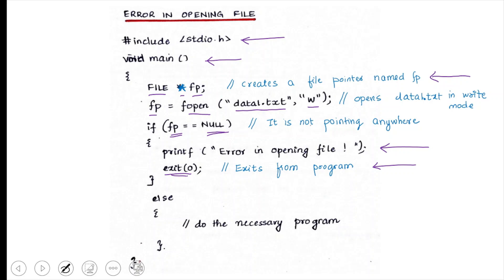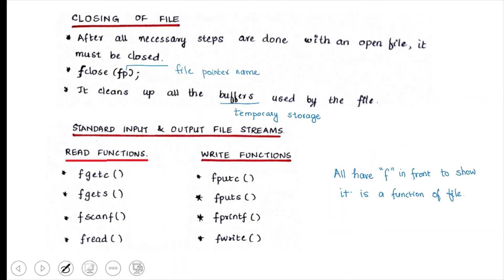If the file pointer is not NULL, it points to a valid memory location and you can perform necessary operations inside the else block. Once you open a book and finish reading or writing, you close it. Similarly, after all file operations, close the file using fclose(fp), where fp is the file pointer. Once closed, any buffers or temporary storage associated with the file are cleaned up by the computer.